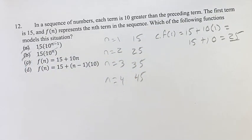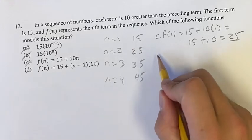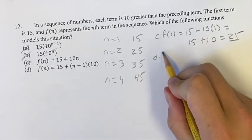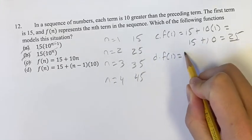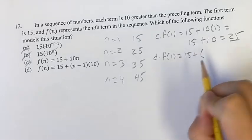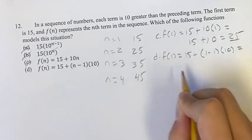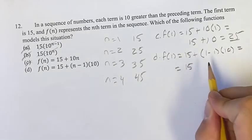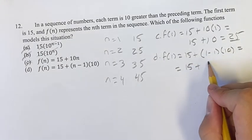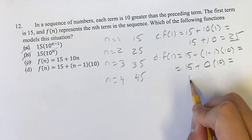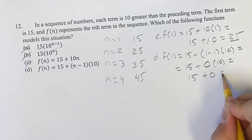So now by default we know that it's going to have to be d, but we might as well plug it in. It's not going to take very long. We can see that f of 1 is equal to 15 plus, n is 1, 1 minus 1 times 10, which is equal to 15 plus 1 minus 1 is 0, 0 times 10 is 15 plus 0 is 15.